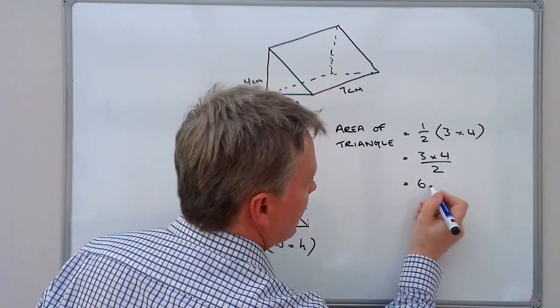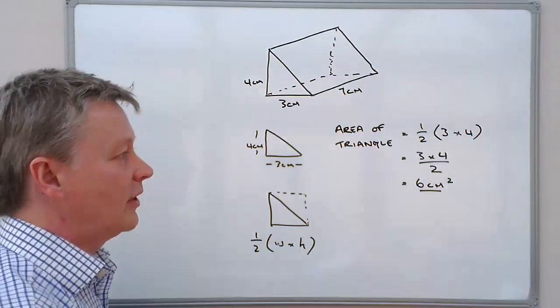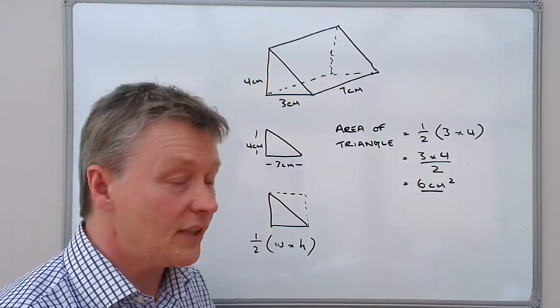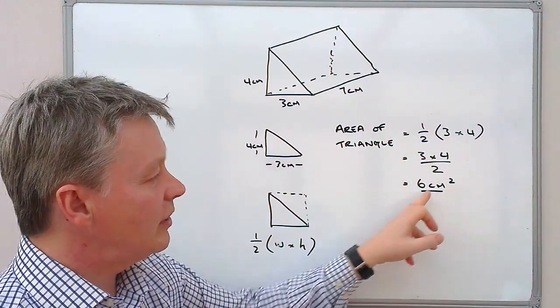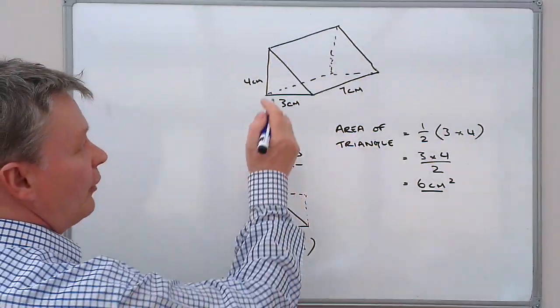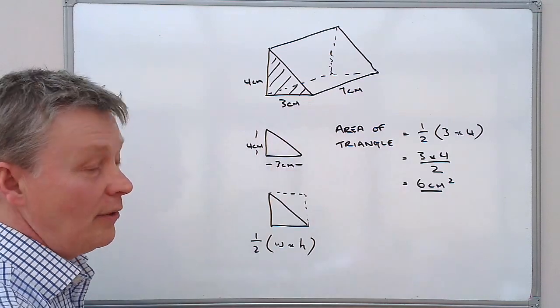So the area of the triangle is 6 centimetres squared. And it is important to make sure that as you're working through these that you quote the units each time.